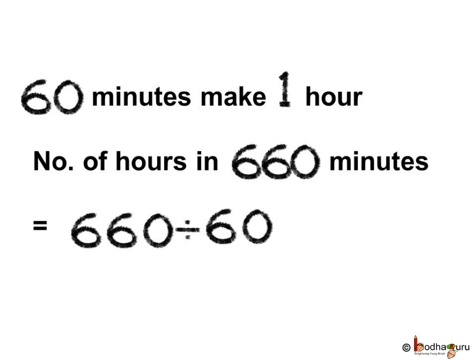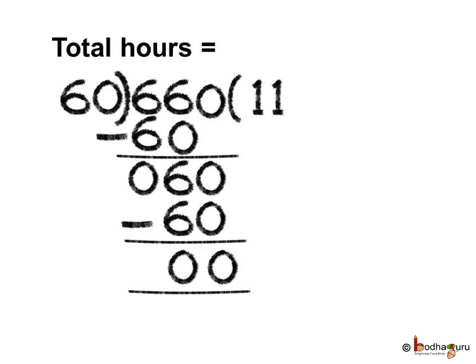As we need to find total hours in 660 minutes, we need to divide 660 by 60 to find the total number of hours. Let us divide 660 by 60. 60 ones are 60. 66 minus 60, the remainder is 6. Now bring the 0 down.